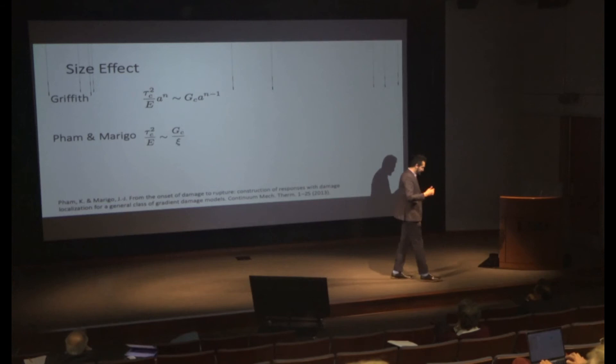And how much energy does that release? That's some stress squared divided by my elastic modulus times the volume. What Marigo and Pham in a series of papers have done is show for a very general class of phase field models you get a relationship like Griffith has between your strength and your Gc. So Tc squared over E is proportional to Gc over ℓ—instead of the Griffith crack length, it's my process zone size. The pre-factor depends on the phase field model you're choosing.